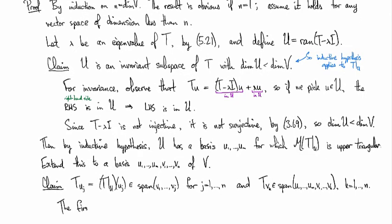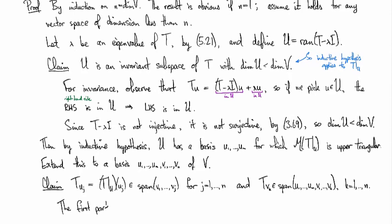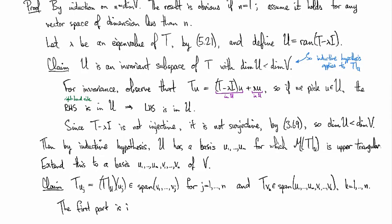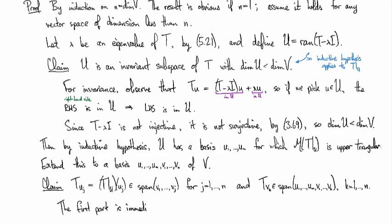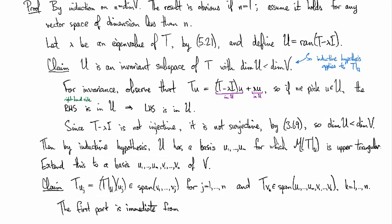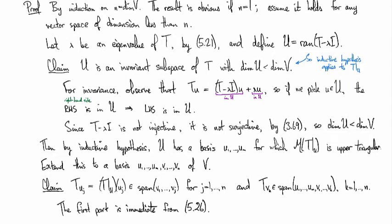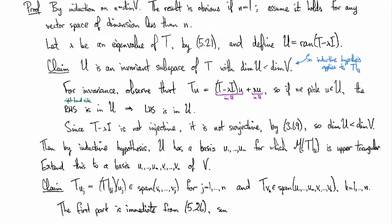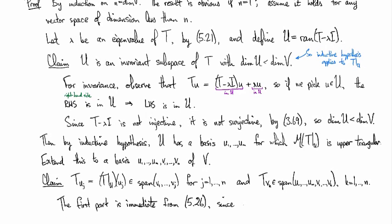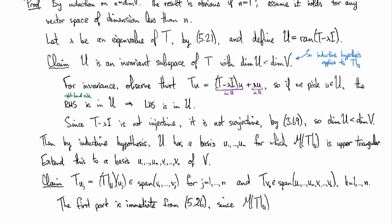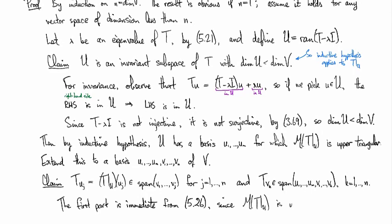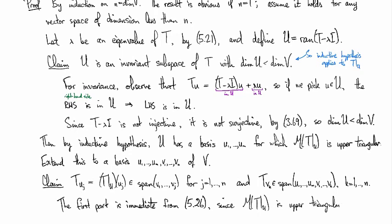Okay. This first part with the uj's is immediate from 5.26 that we proved before. So that was the invariance of the triangular basis. So that one comes because we know that the matrix of T restricted to U is upper triangular.